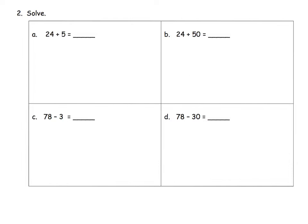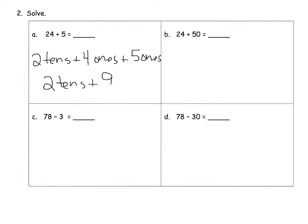Here's a practice problem: two tens and four ones plus five more ones. Written out: two tens plus four ones plus five more ones gives us two tens plus nine ones, so the answer is twenty-nine. The idea of like units means we would not add the two tens to the nine ones and get eleven, because they're not like units — two tens and nine ones are different units.